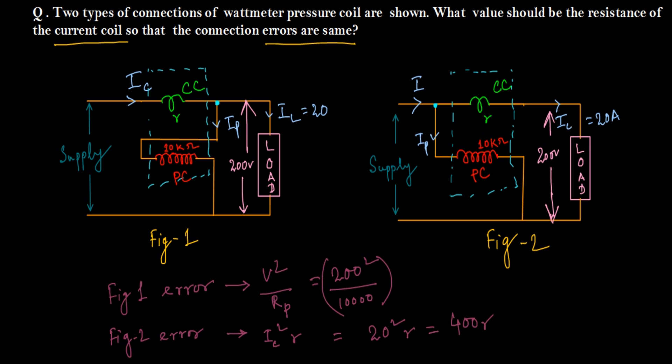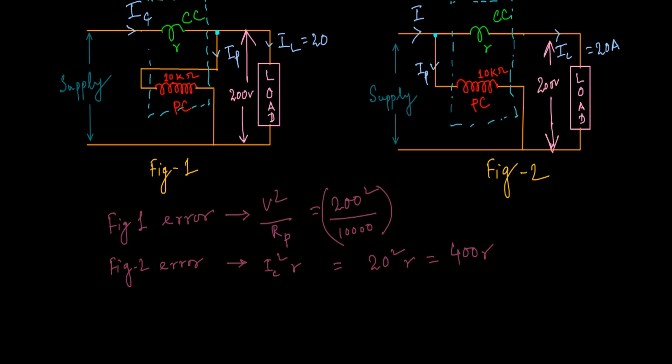Now what is our objective? Our objective is to make the errors same. So if we want to equate these two errors for making them the same, that means 200 squared by 10 kilo ohm equals 400R.